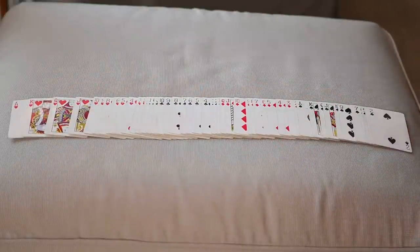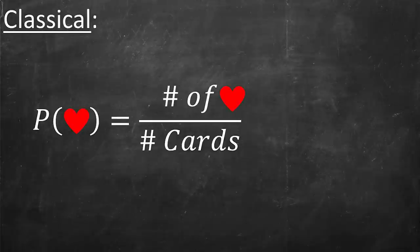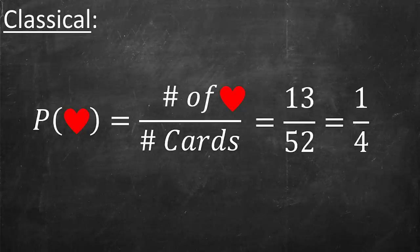Let's begin with something called classical or theoretical probability. This is a normal deck of cards with an equal number of 13 hearts, 13 clubs, 13 diamonds, and 13 spades. Because they're all equally likely, if I draw one off the top at random, then there's a one-quarter chance that it's going to be a heart. In classical probability, we write this as: the probability of drawing a heart is just the total number of hearts available, which is 13, divided by the total number of cards, which is 52, and that's equal to one-quarter.